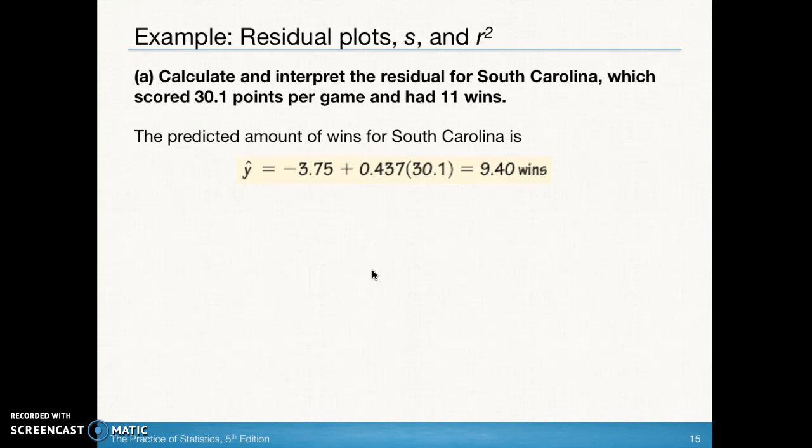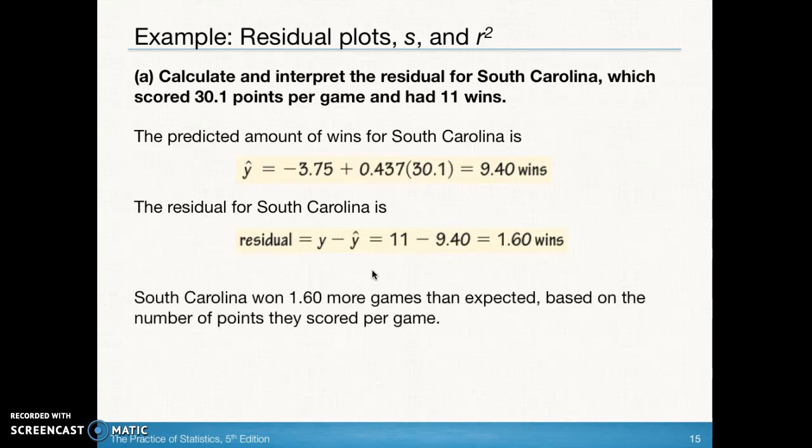We know that the residual is y minus y hat, so we're going to do 11 minus 9.40 to get 1.60 wins. That's the residual value for when x is equal to 30.1 points per game. Let's interpret part a.